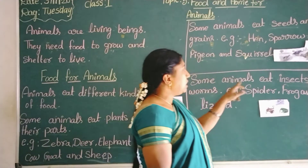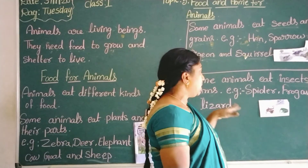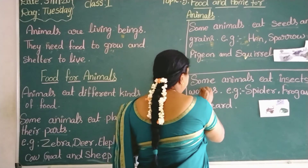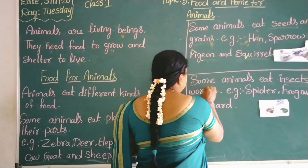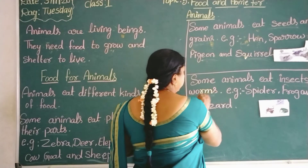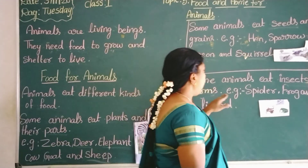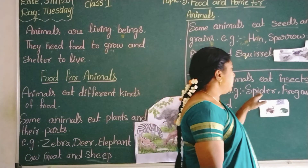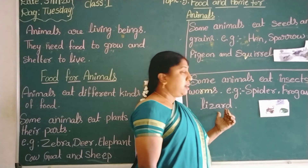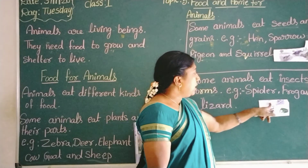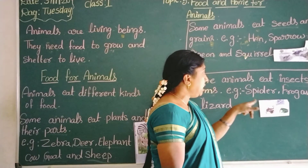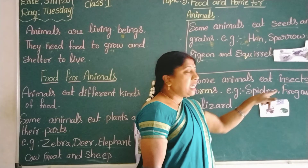Some animals eat insects or worms. Example: spider, frog and lizard. See, look at this picture children — some animals eat insects.